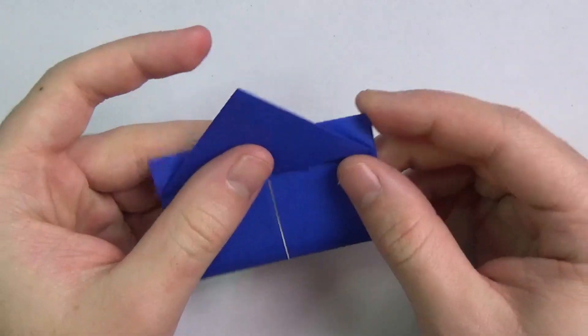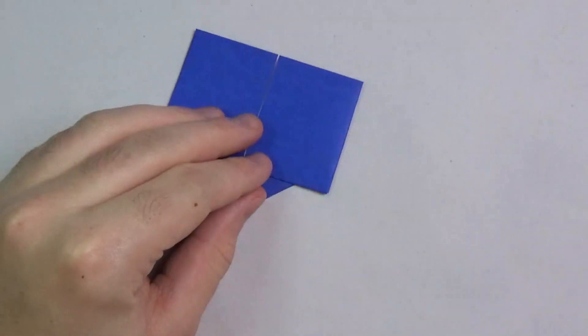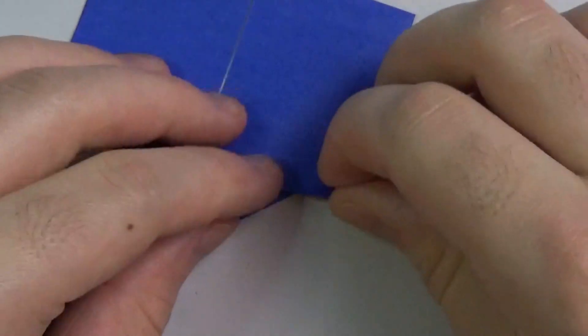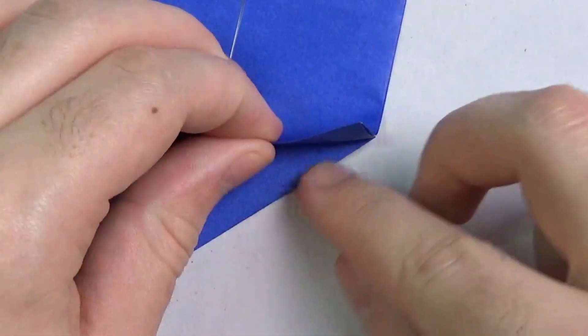Okay, and now let's get rid of these two points. So let's reverse fold them. So turn over. And fold this over.